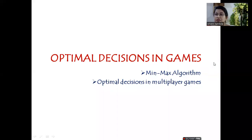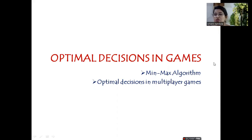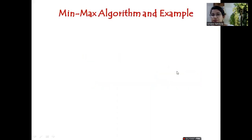Hello everyone, welcome back to Artificial Intelligence Sessions. In this session we will discuss optimal decision in games. Under that we will first see the minimax algorithm for two-player games, and for multiple players, we will also see how to take the optimal decision. Let us get into the details — first the minimax algorithm, followed by an example.